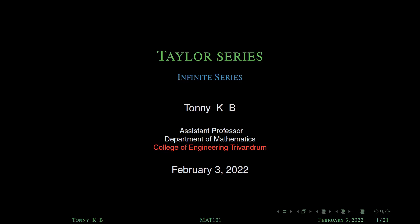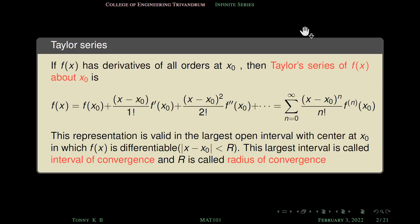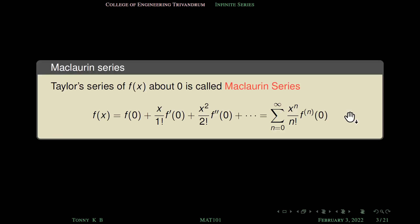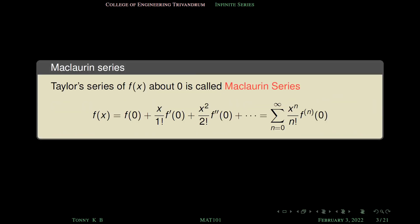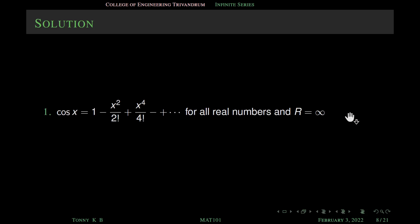Namaskaram! In this session we will discuss more problems related to Taylor's and Maclaurin series. In the last class we have seen the definition of Taylor series and the Maclaurin series. Maclaurin series is the special case of Taylor series — it is the Taylor series about x equal to 0. This is the solution of the last homework.